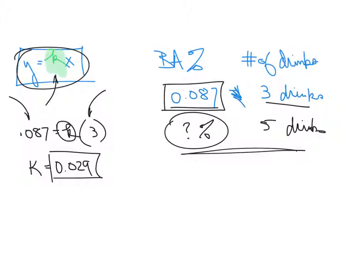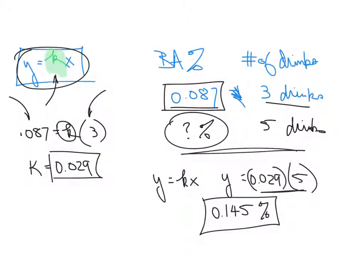So we've got K now. So we're going to take our original equation, and we are going to put in what we know. We are looking for the blood alcohol level. We know K, and we know how many drinks we're talking about. So really we're just going to multiply those two, and we get a blood alcohol level of 0.145 percent. That's what our Y value is.